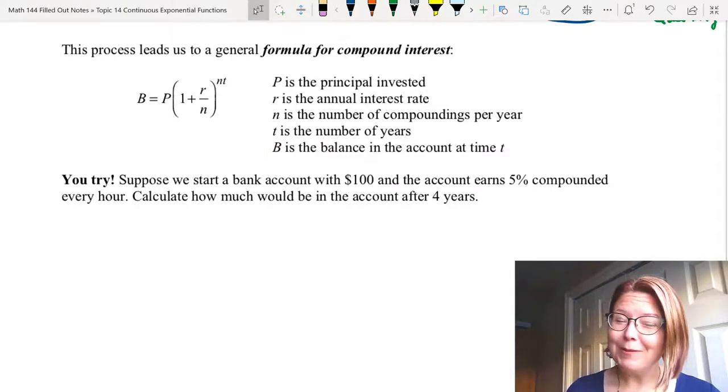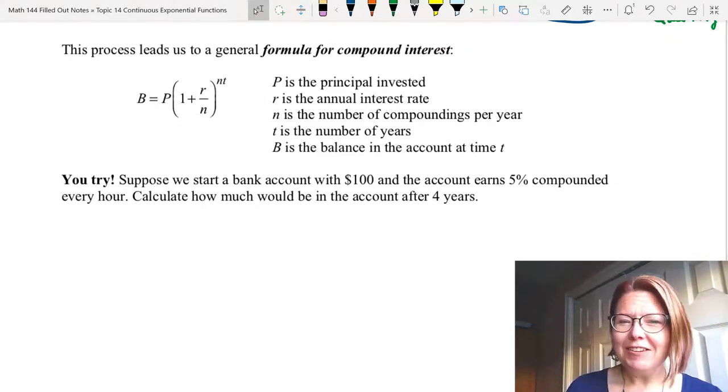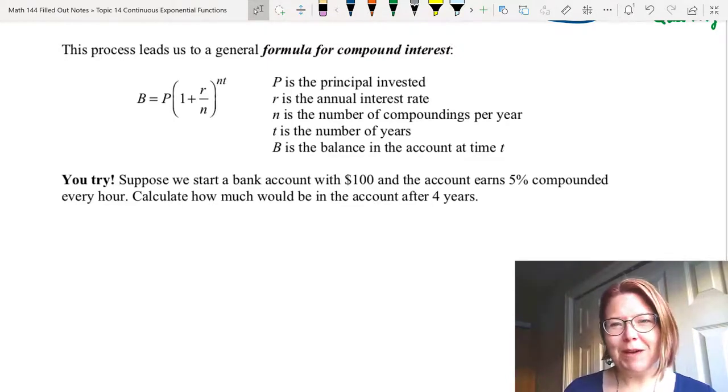I'd like you to try a problem using this formula. We're going to start a bank account with $100 and accrue 5% interest, but we're going to compound it every hour. Now calculate how much would be in the account after four years. Pause the video, come back when you've given it a try.